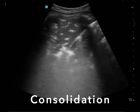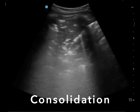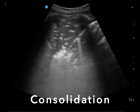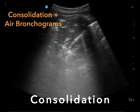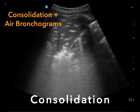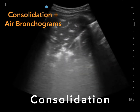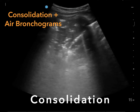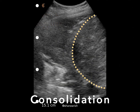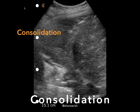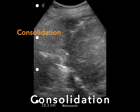When alveoli fill with fluid or are collapsed, you may see frank consolidation on lung ultrasound. It will result in a tissue-like density within the lung, and bright white areas within that density are air bronchograms — suggestive of pneumonia more so than atelectasis. Here's another example: the tissue-like density above the diaphragm looks like the liver. This is called hepatization — we know it's not the liver because it's above the diaphragm.